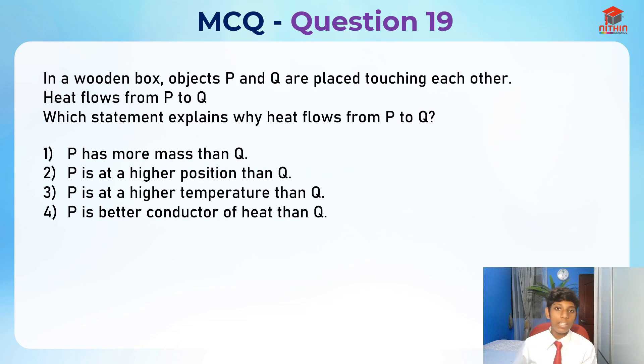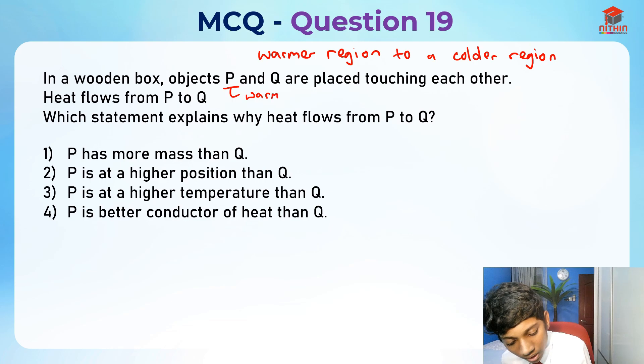First of all, what does heat flow from? Heat actually flows from a warmer region to a colder region. This means that P is actually warmer while Q is colder.